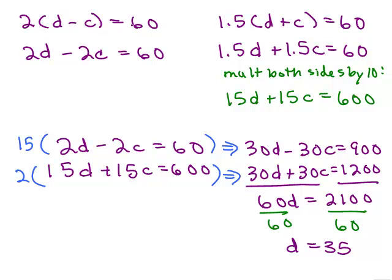If not, this is what it would take to get d equals 35. You would do the distributive property on both, get rid of the decimal on the right-hand side,